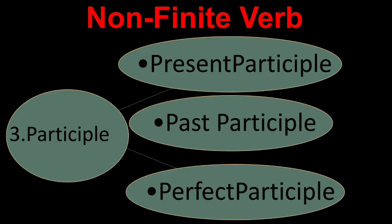Third one is participle. Let us know the parts of the third one. Participle has three parts: first one is present participle, second is past participle, and third one is perfect participle.